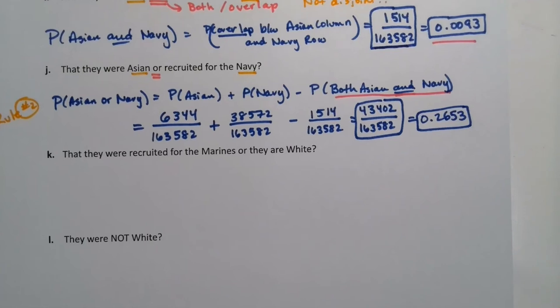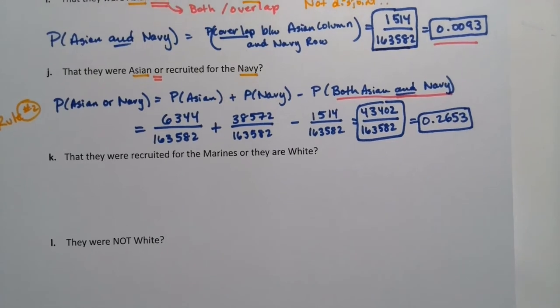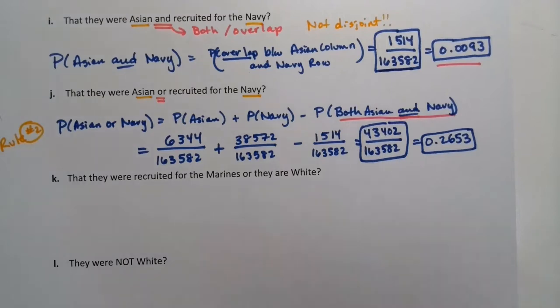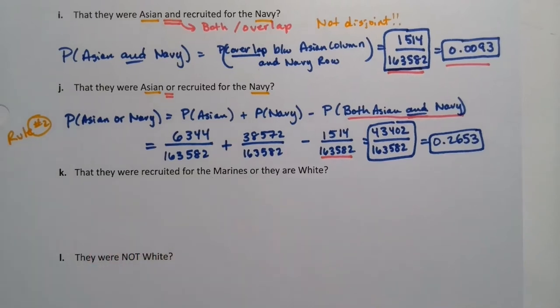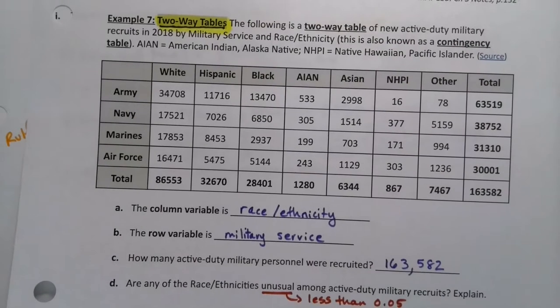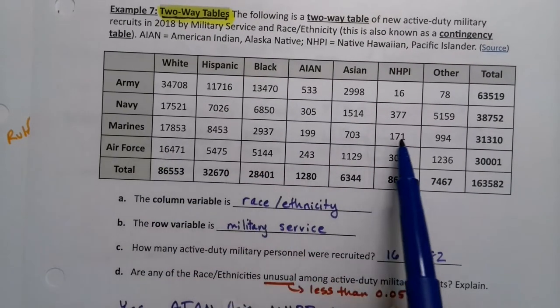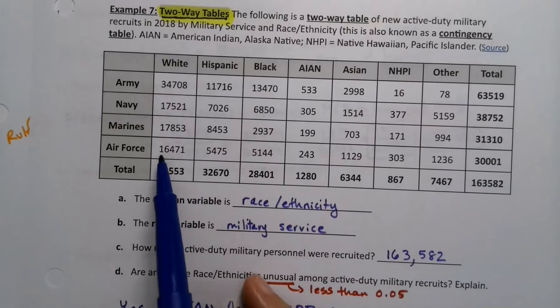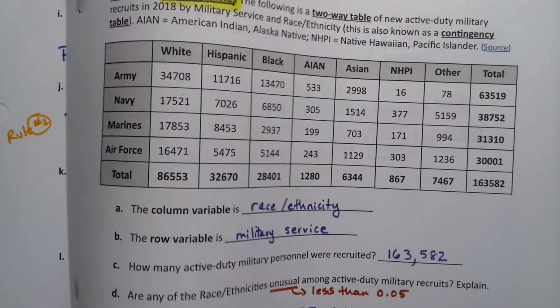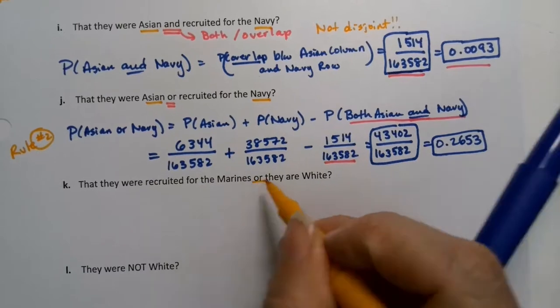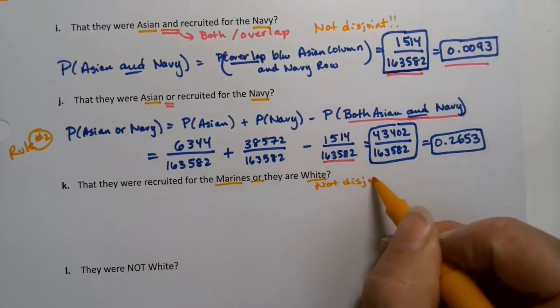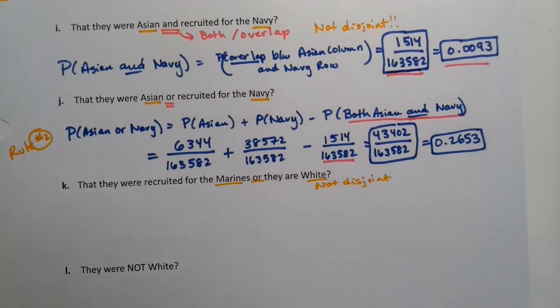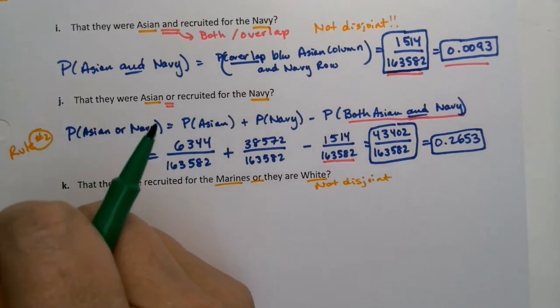All right, well, that was so much fun. Let's do it again. Now, this one, we had a little precursor because we'd already seen the 1,514. And so we were using that 1,514 right here. But what if you don't have a precursor and you have to do it? So we want to see if they're recruited for the Marines or they are white. Let's see here. Marines are right here, they're the third row. And white is the first column right here. So what we're going to do is the same thing we just did. They're not disjoint.